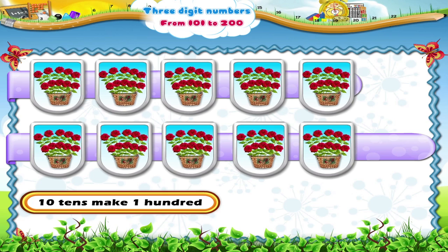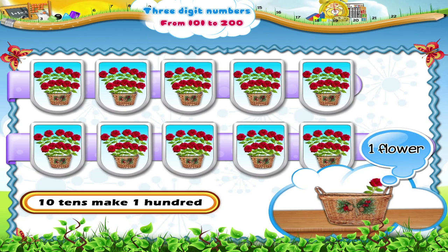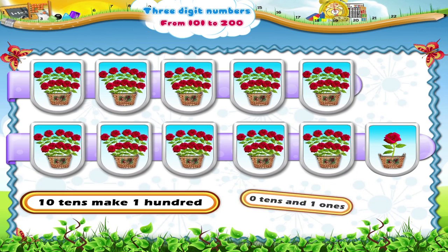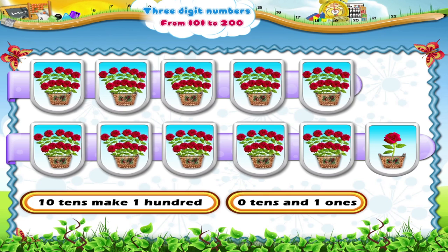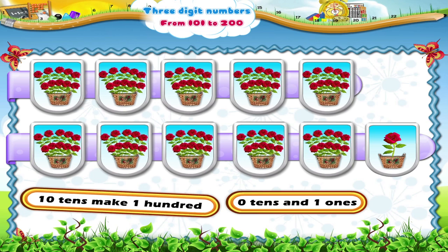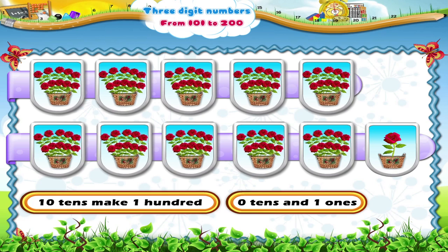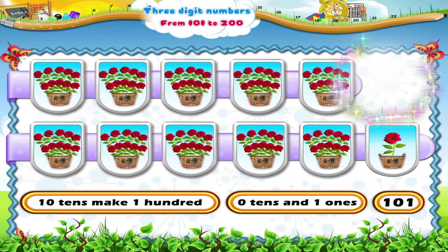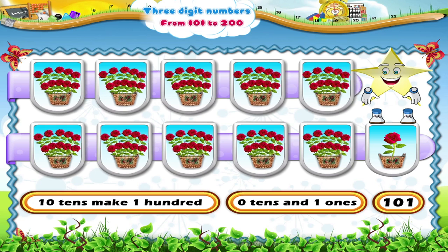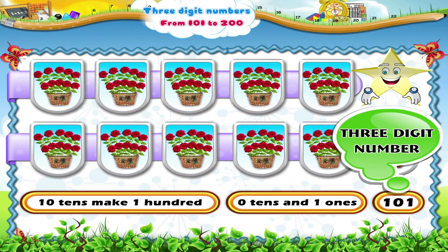After forming the groups, are there any more flowers left? Yes, only one flower is left. So we get zero tens and one ones. Can you tell me which number is formed with one hundred, zero tens and one ones? Yes, it is one hundred and one. So there are one hundred and one flowers in the basket. One hundred and one is a three-digit number.